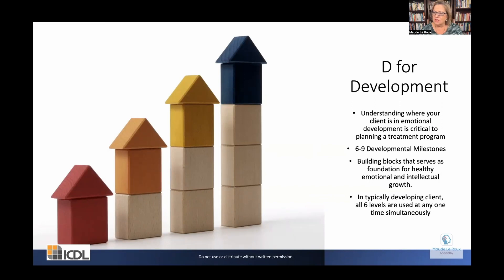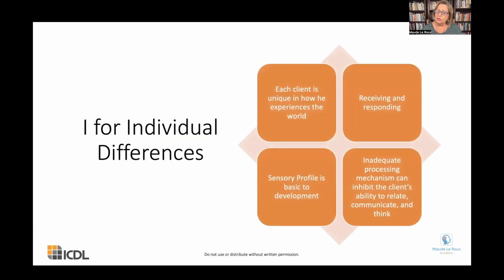We assess and figure out on which level the constrictions lie that inhibit the child from becoming the full place of being where they need to be. Then we look at individual differences — what does their profile look like? What is their expressive and receptive language? What is their cognitive ability, their immune system, their medical situation? But also, as an OT, I'm very interested in their sensory profile, and also the sensory profile of the parent, and the goodness of fit between different family members' individual differences — and how to restore joy and peace in that fit.